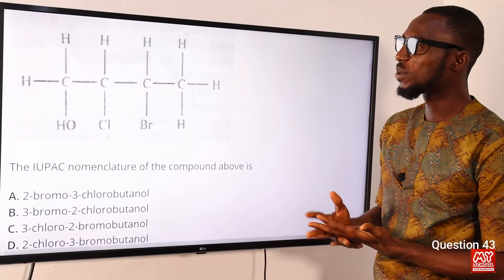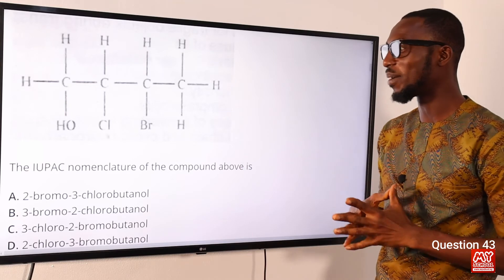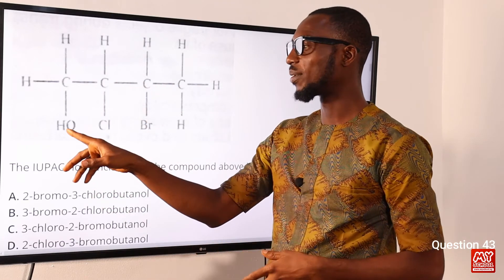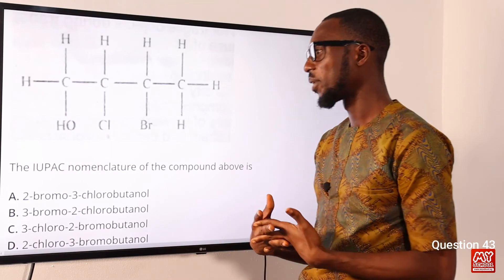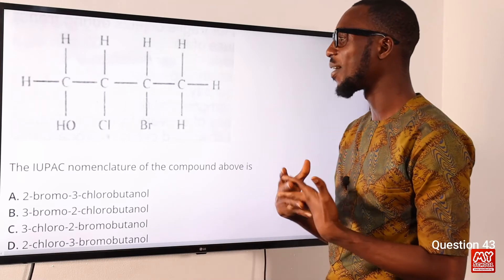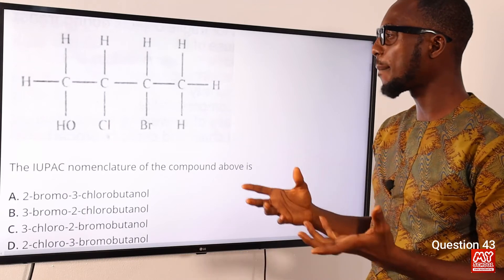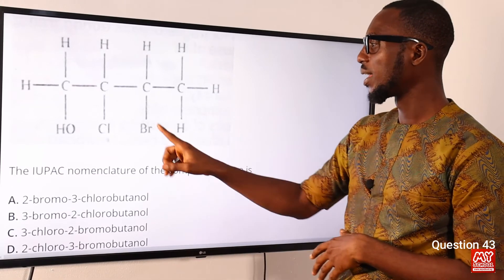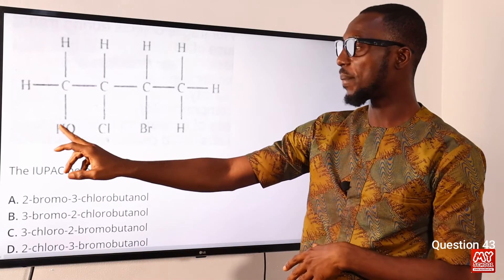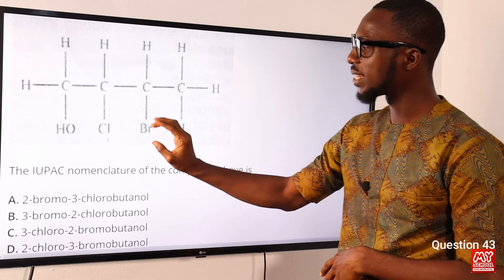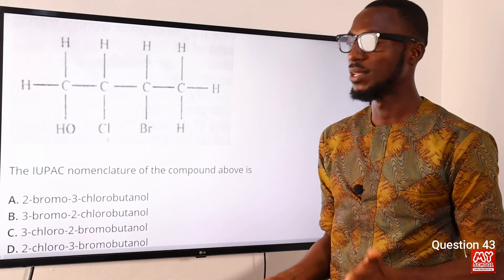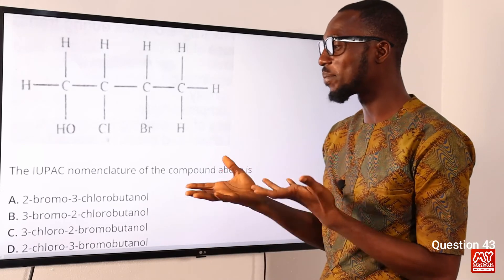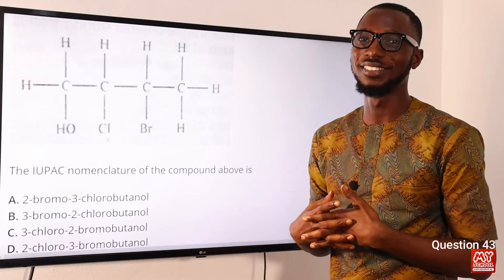Question 43: The IUPAC nomenclature of the compound shown above is what? Counting the carbon chain, we have four carbons — so it is a butanol. The functional group is OH (alcohol). Applying alphabetical order in naming substituents — bromo comes before chloro — and counting from the end closest to the substituents, the compound is 3-bromo-2-chlorobutan-1-ol.